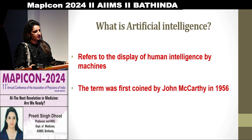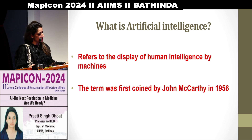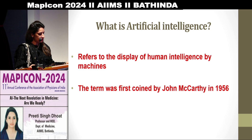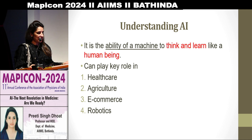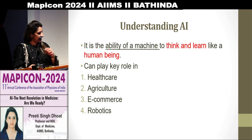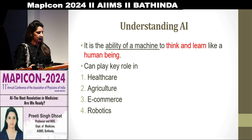So what is artificial intelligence? Artificial intelligence refers to the display of human intelligence by machines, and this term was first coined by John McCarthy in 1956. It is the ability of a machine to think and learn like a human being, and it can play an active role in healthcare, agriculture, e-commerce, and robotics.